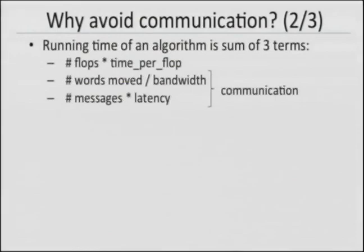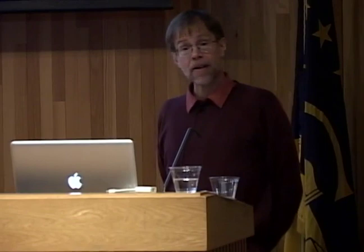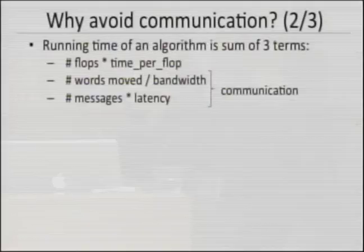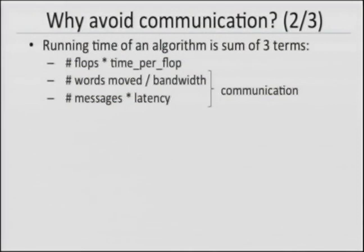Here's my very simple model to measure the optimality of an algorithm. I'll count the number of flops, I'll count the number of words moved — say between two processors — and I'll count the number of messages, where a message is a contiguous chunk of words packed together to move. All three have separate costs: the time per flop, the reciprocal bandwidth or time per word, and the latency cost for the message.